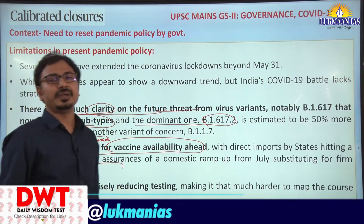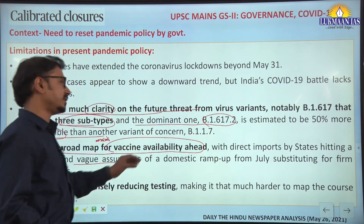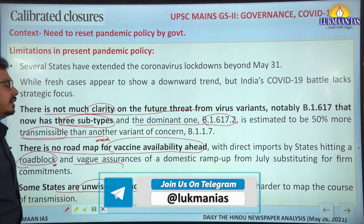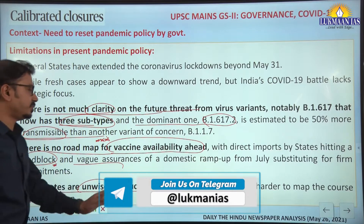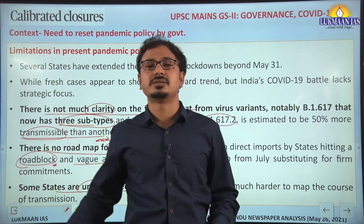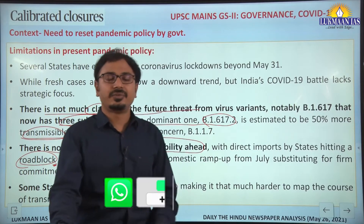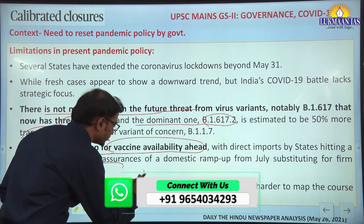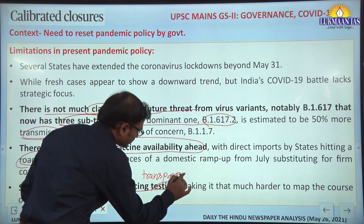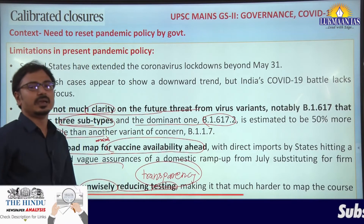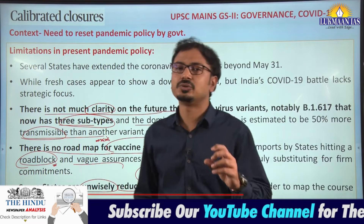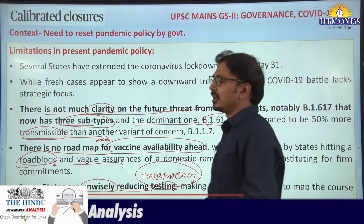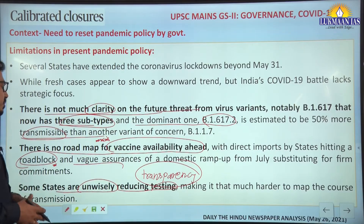State governments are also facing many roadblocks in buying vaccines from the international market. Some states are unwisely reducing testing numbers, making it much harder to map the course of transmission and future pandemic waves. There is also a lack of transparency in the data regarding tests, infections, and death figures available to the public, making it harder to understand the future course of this pandemic.